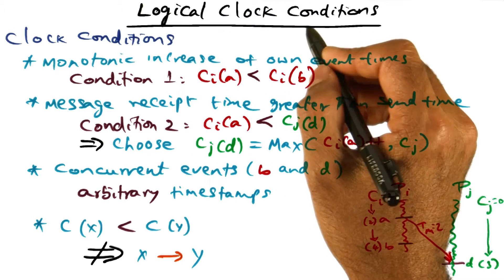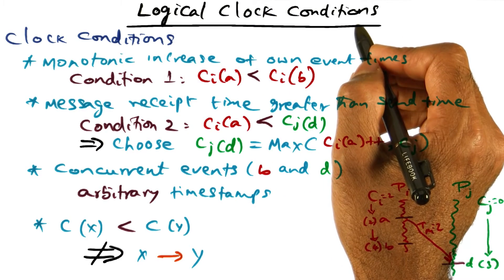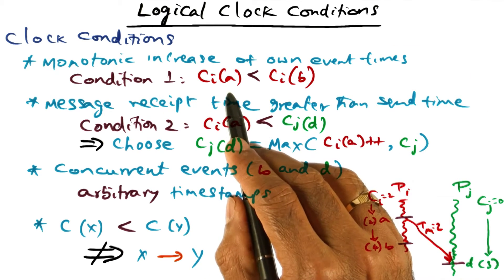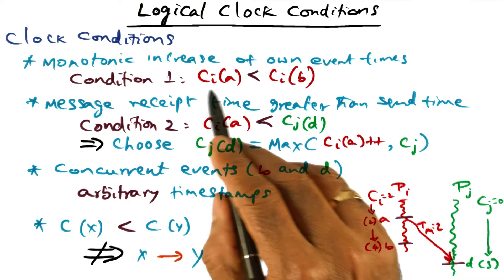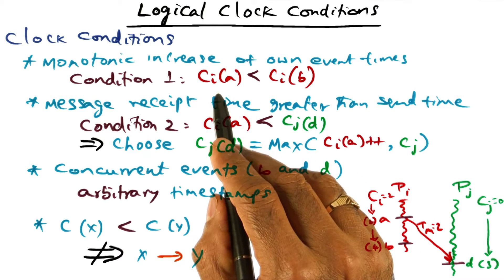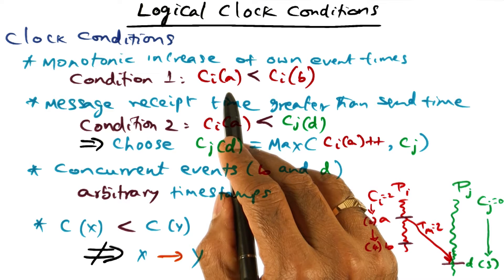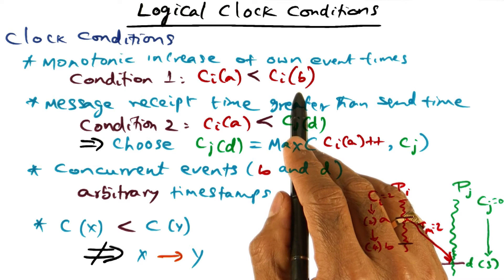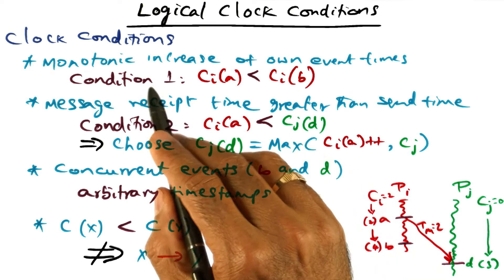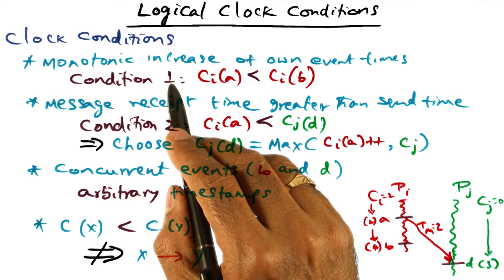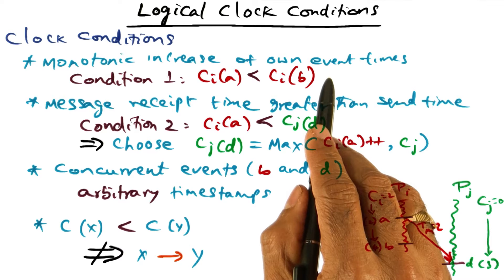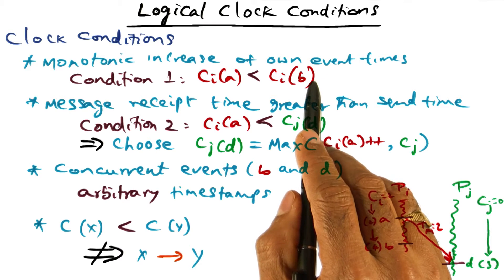We are ready to describe the conditions for the logical clock proposed by Lamport. The first condition is that if I have two events A and B in the same process, the time stamp associated with event A has to be less than the time stamp associated with event B. In other words, we have a logical clock on every node of the distributed system that is monotonically increasing as events happen on that process.